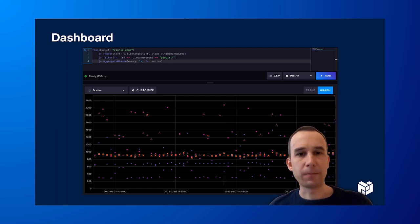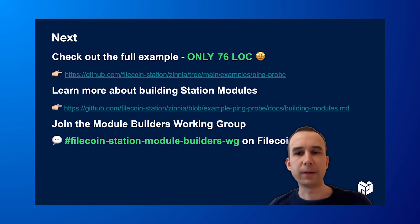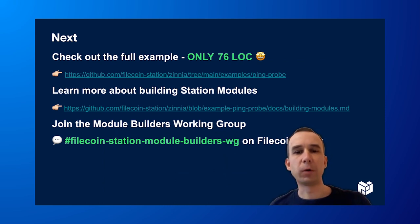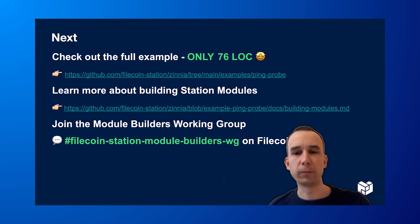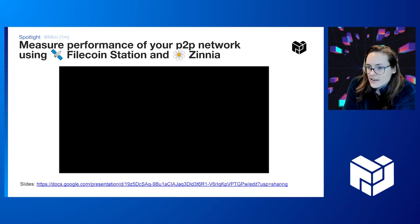And that's it — it was only 76 lines of code. You can find the full example on GitHub, and you can learn more about building Station modules in our documentation. If this is something you can use for your project, please come and join the Module Builders Working Group. You can find us on Filecoin Slack.